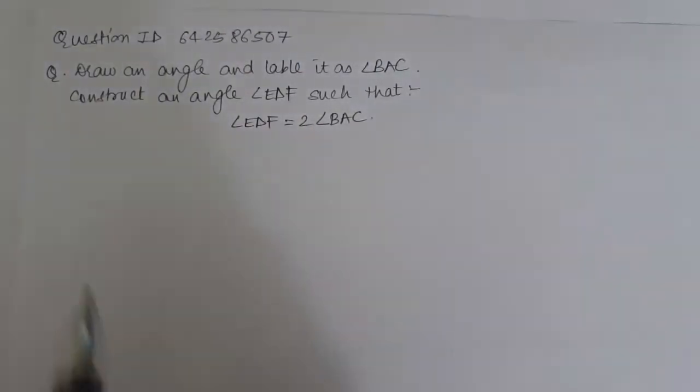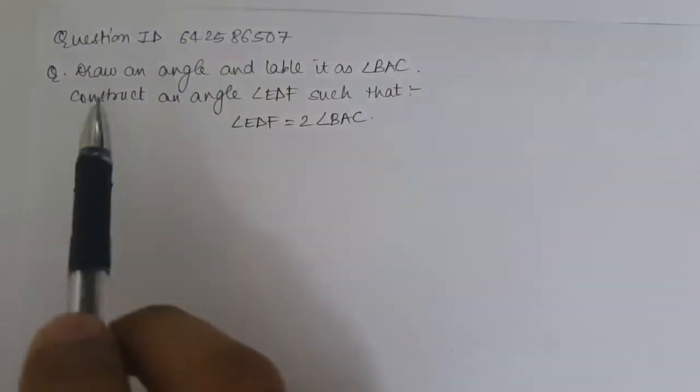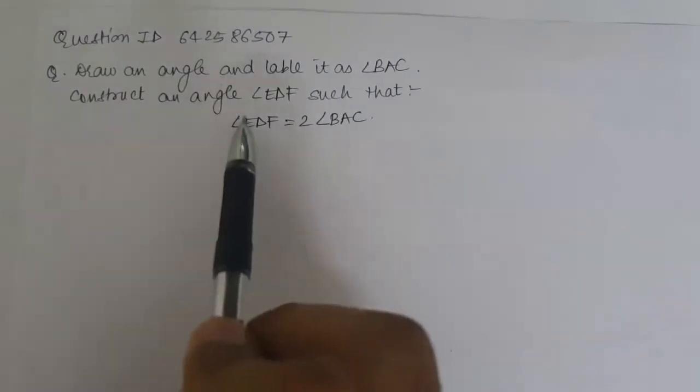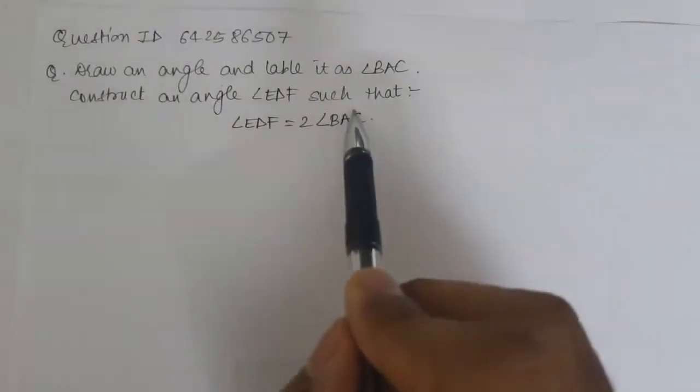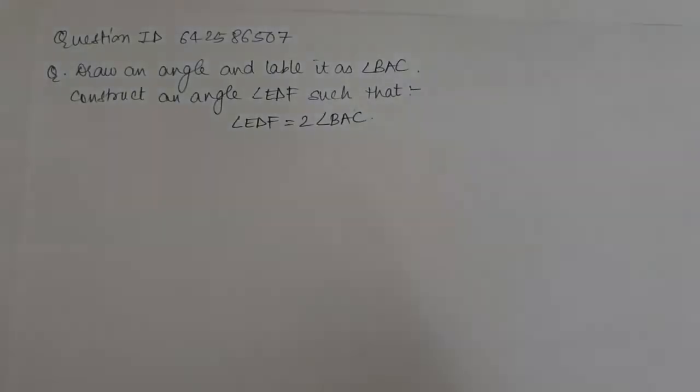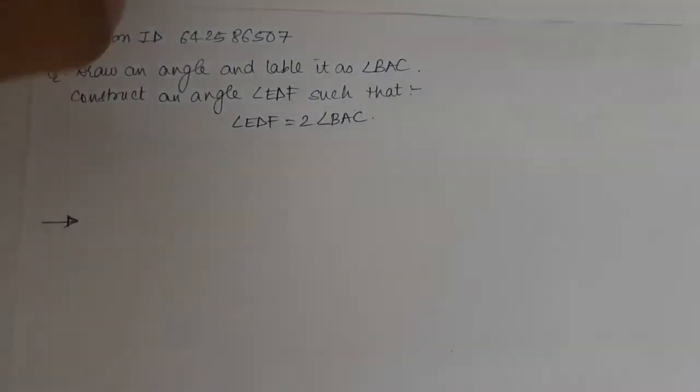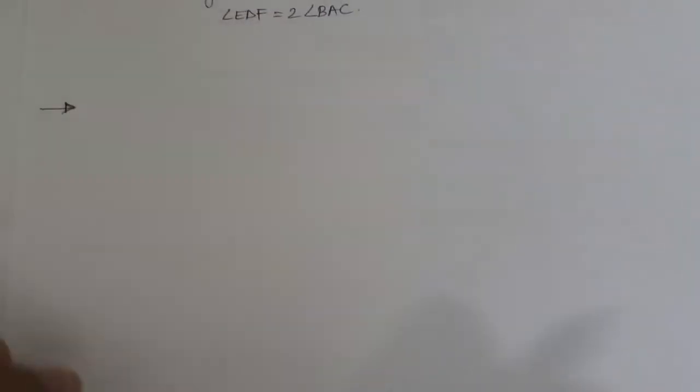Question is, draw an angle and label it as angle BAC. And we have to construct an angle EDF such that EDF is 2 times BAC. So we start by initially constructing a random angle BAC.